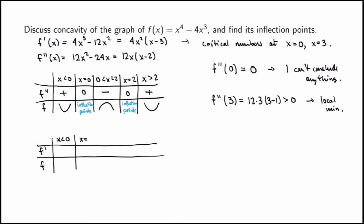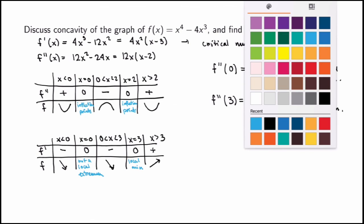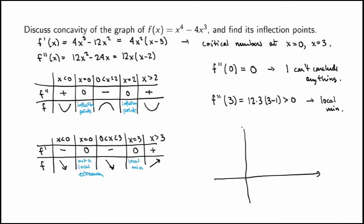Constructing a table for the first derivative with the three regions — x less than 0, x between 0 and 3, and x greater than 3: for x negative, x² is positive but (x − 3) is negative, so f prime is negative — decreasing. For x between 0 and 3, x² is still positive and (x − 3) is still negative — still decreasing. For x greater than 3, everything is positive — increasing. From the first derivative test, x = 0 is not a local extremum since the function is decreasing on both sides.